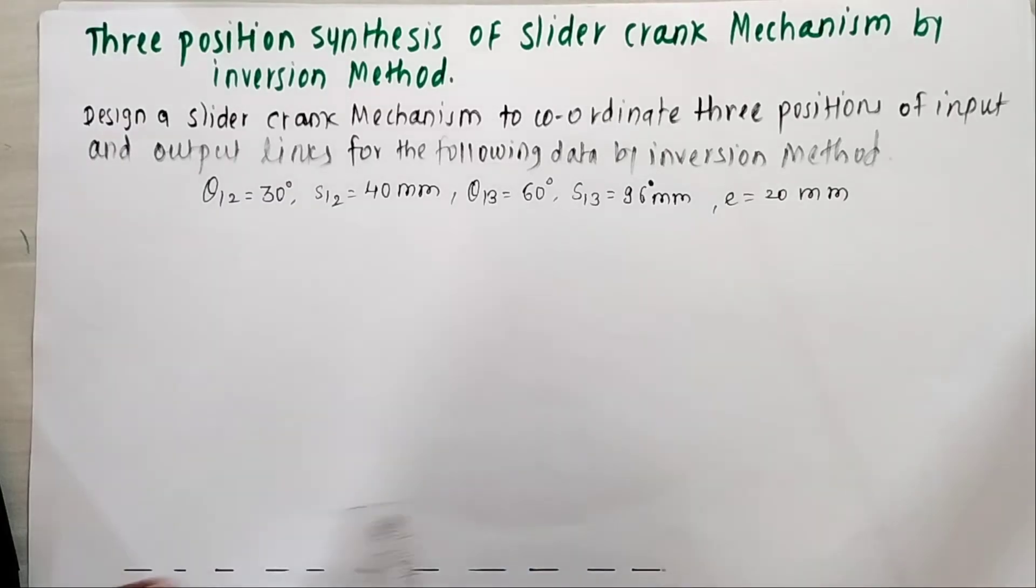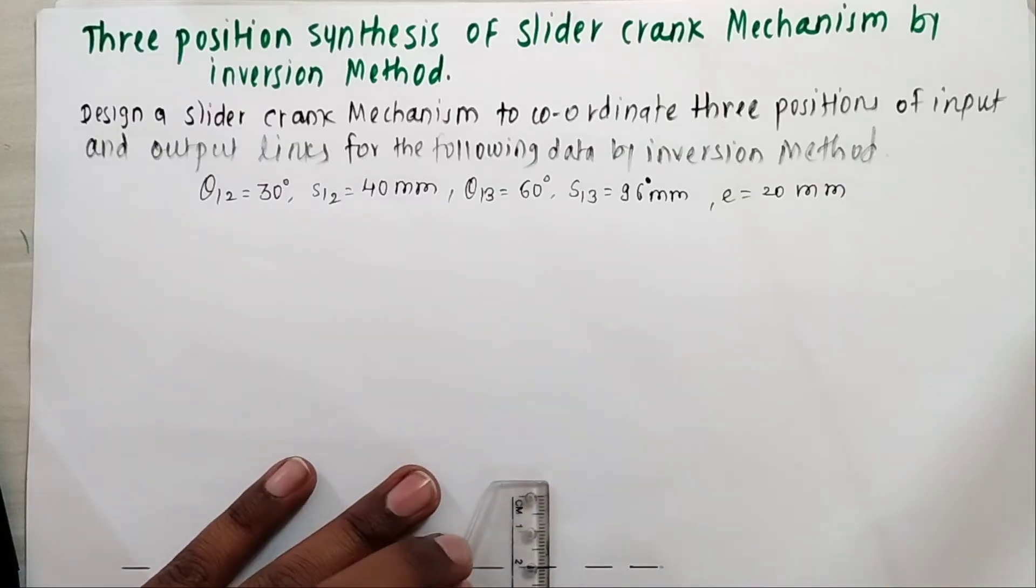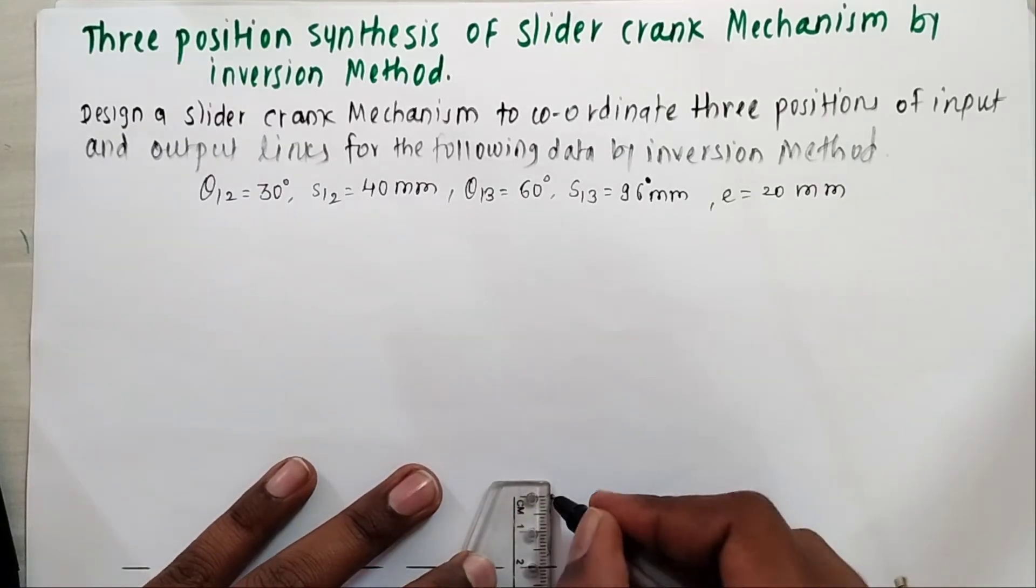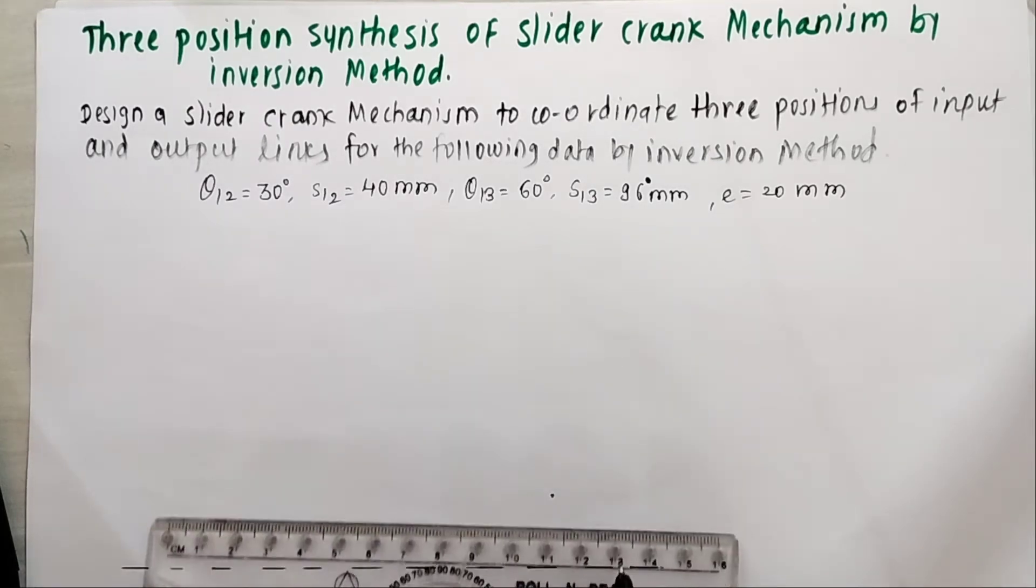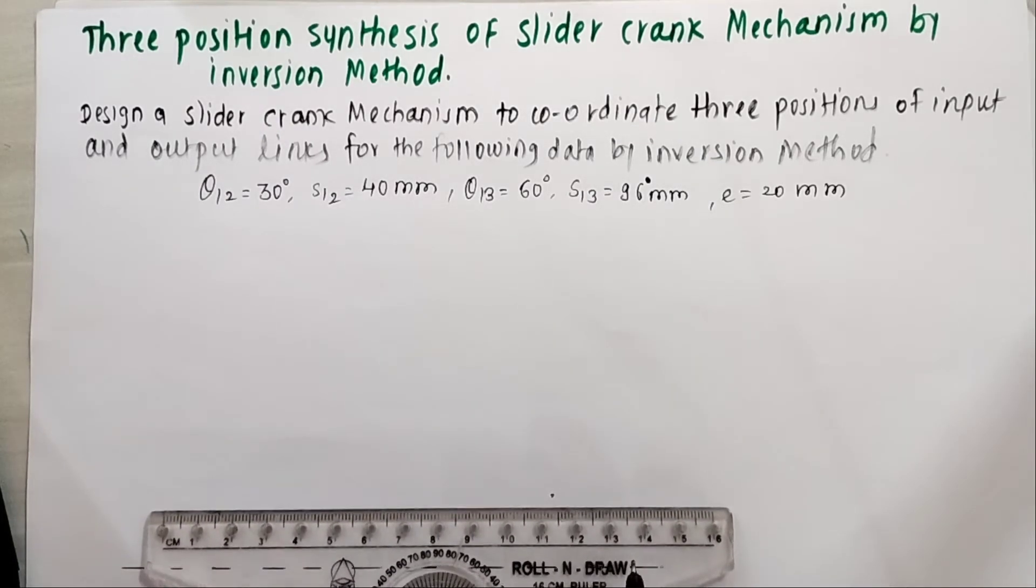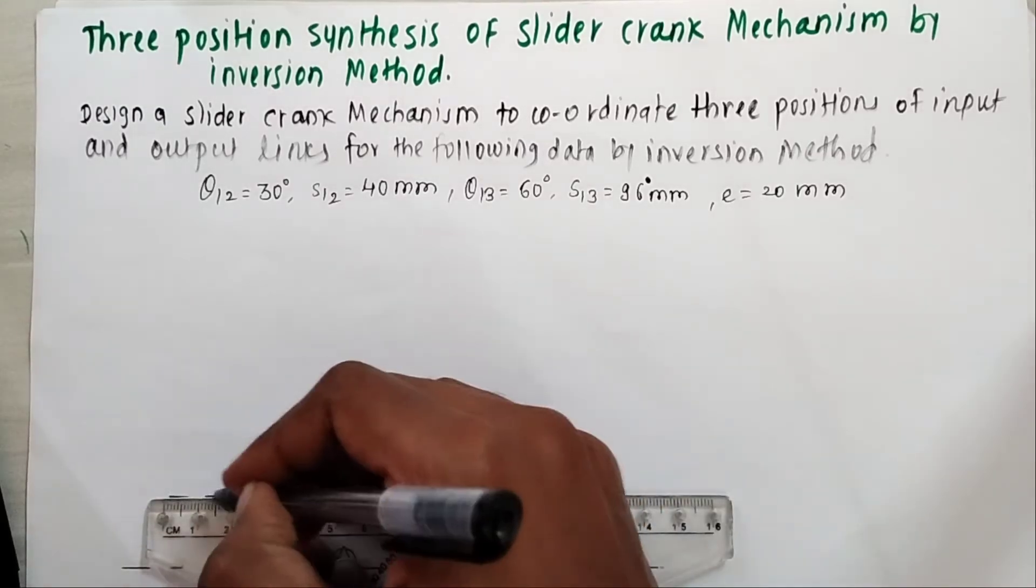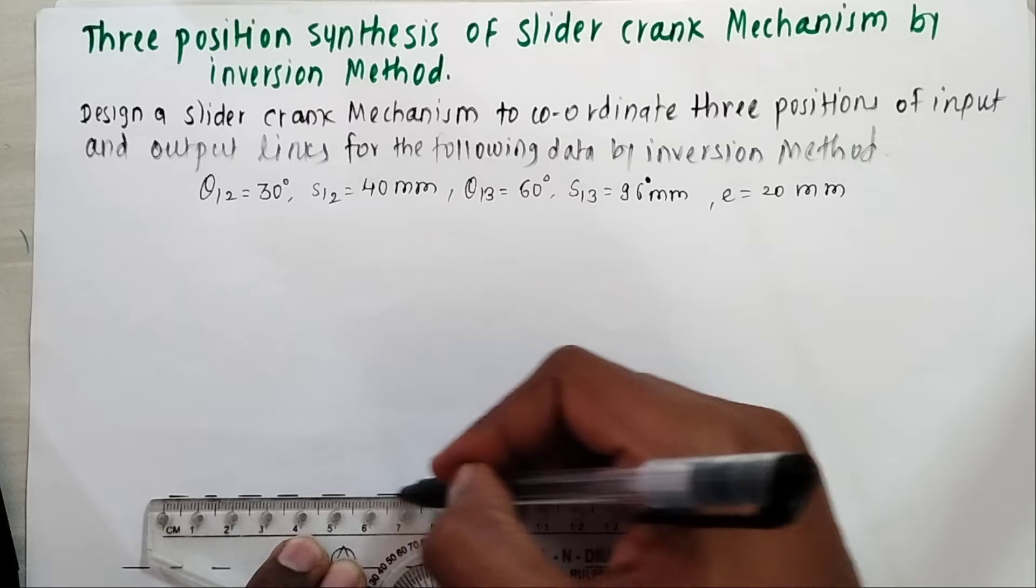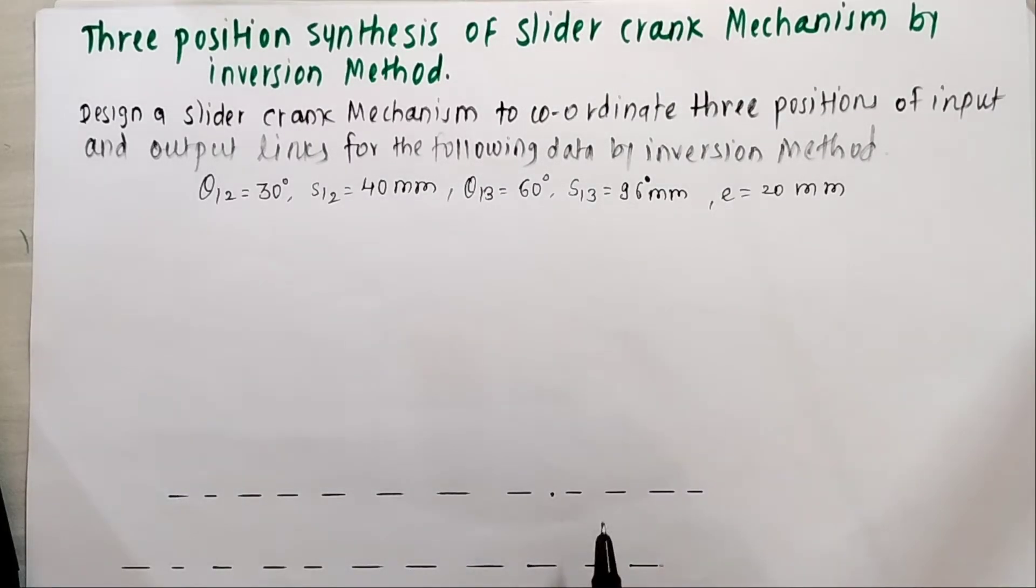With reference to this line at distance E equal to 20 mm, that is 2 cm, I have to mark one more line. I will draw another line at a distance of 2 cm. These two lines represent the line of slider and line of fixed link.